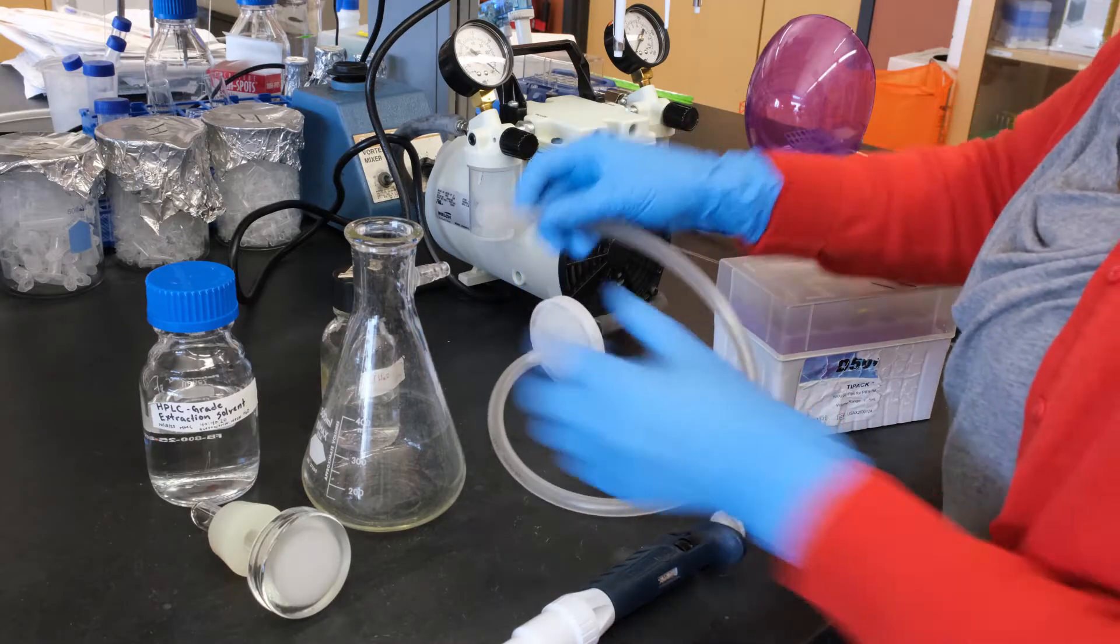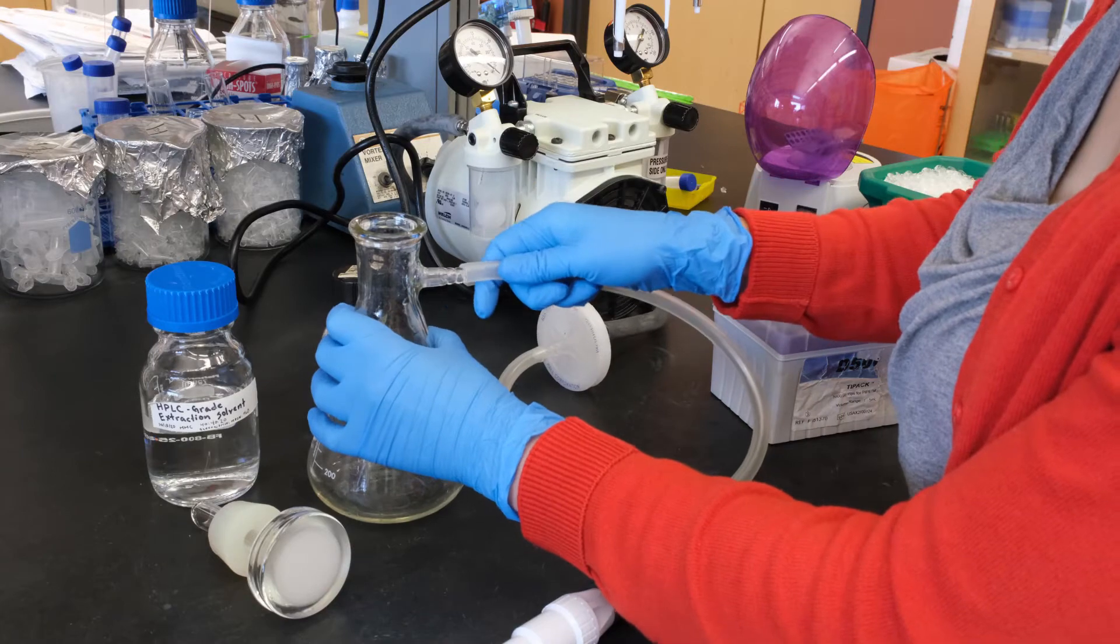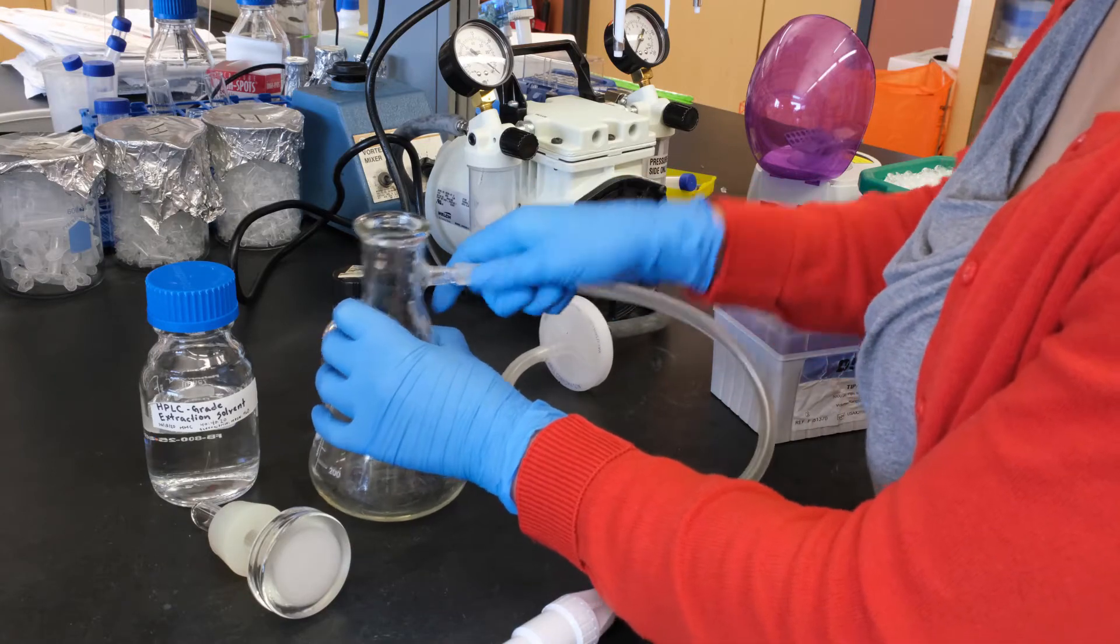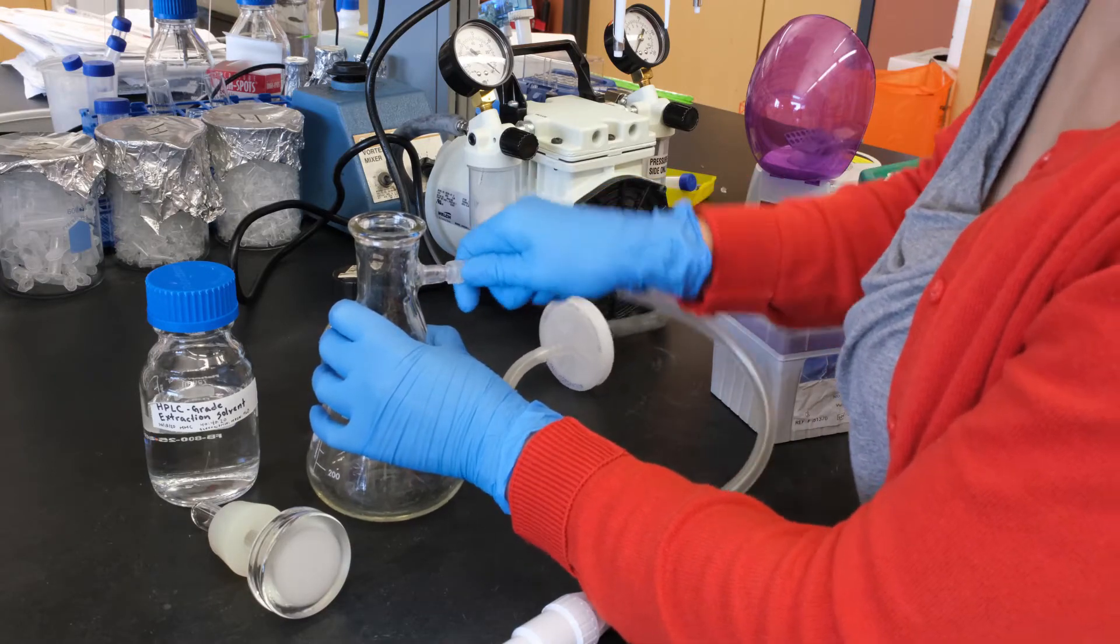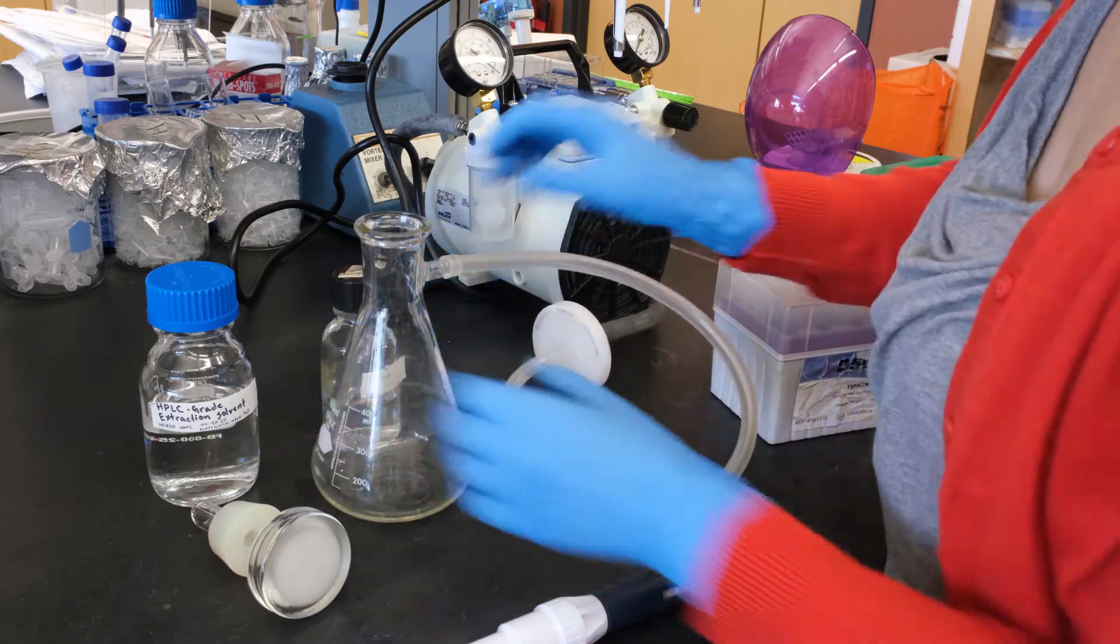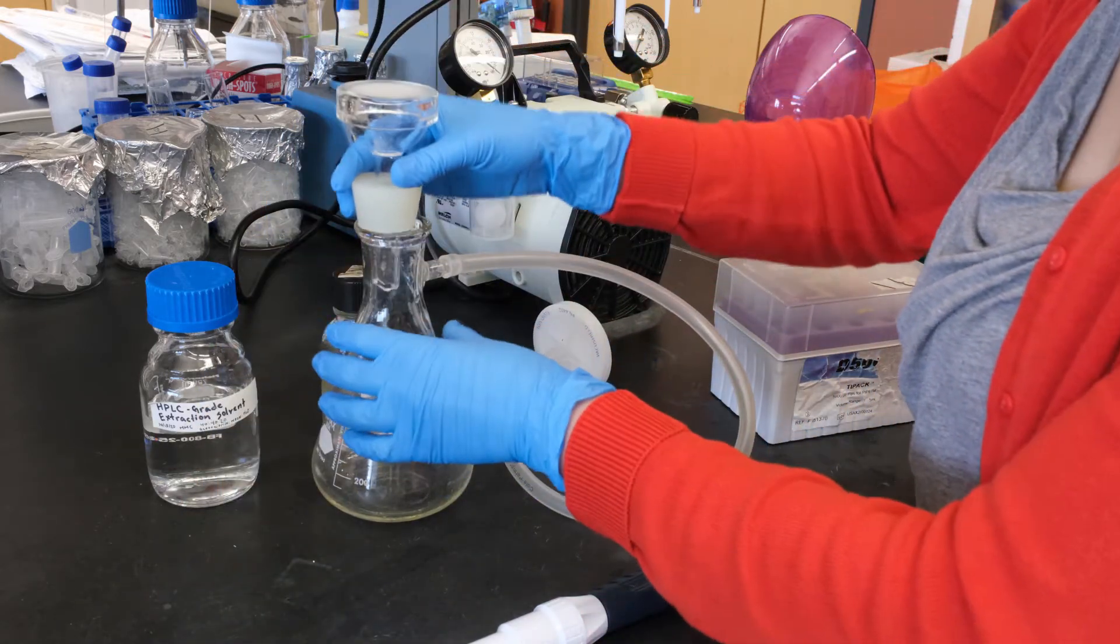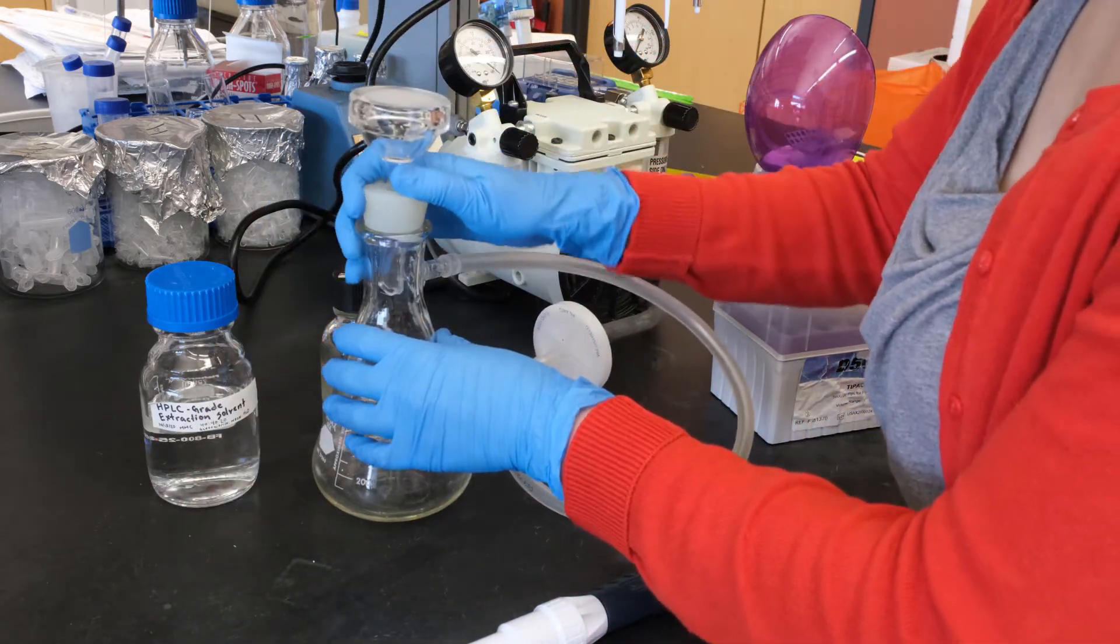Attach the vacuum flask to the vacuum pump with tubing. Insert the glass funnel, make sure everything is secure here, and then turn on the vacuum pump.